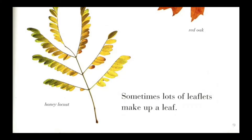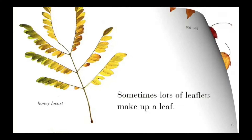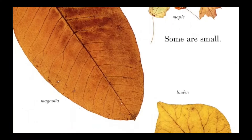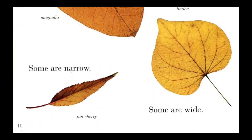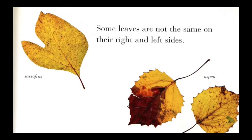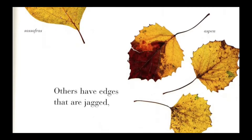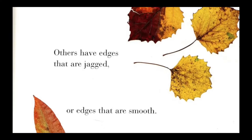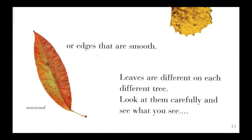Sometimes lots of leaflets make up a leaf. Some are big, some are small. Some are narrow, some are wide. Some leaves are not the same on their right and left sides. Others have edges that are jagged, or edges that are smooth. Leaves are different on each different tree — look at them carefully and see what you see.